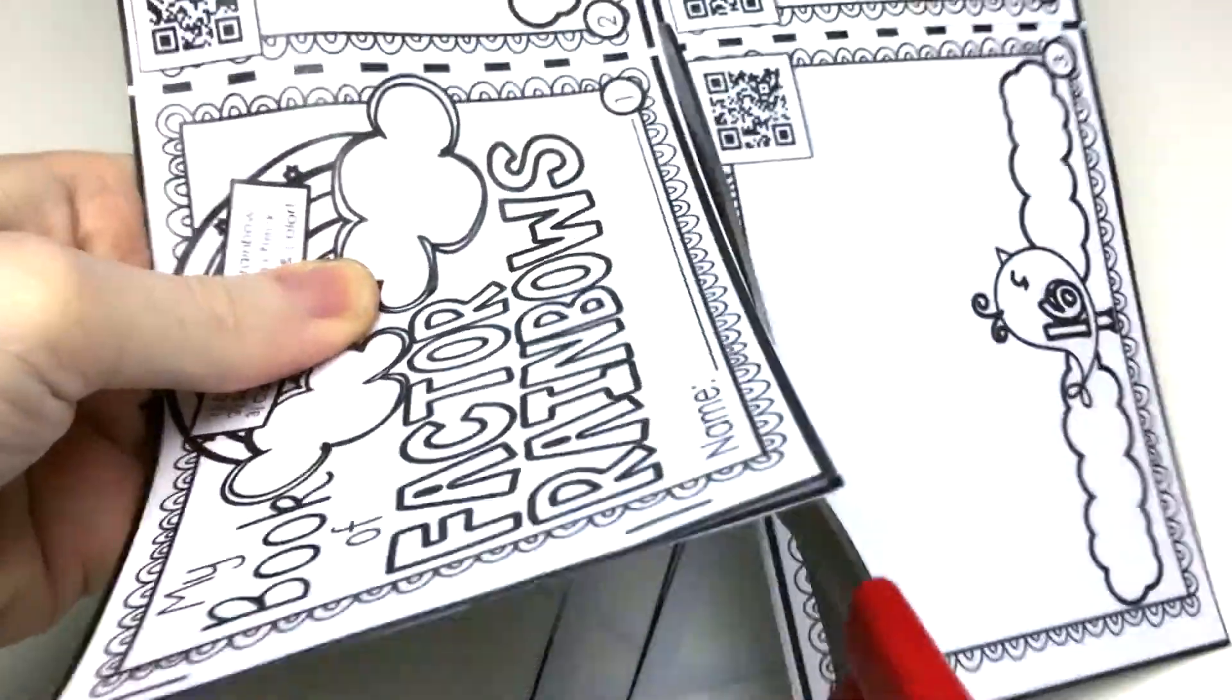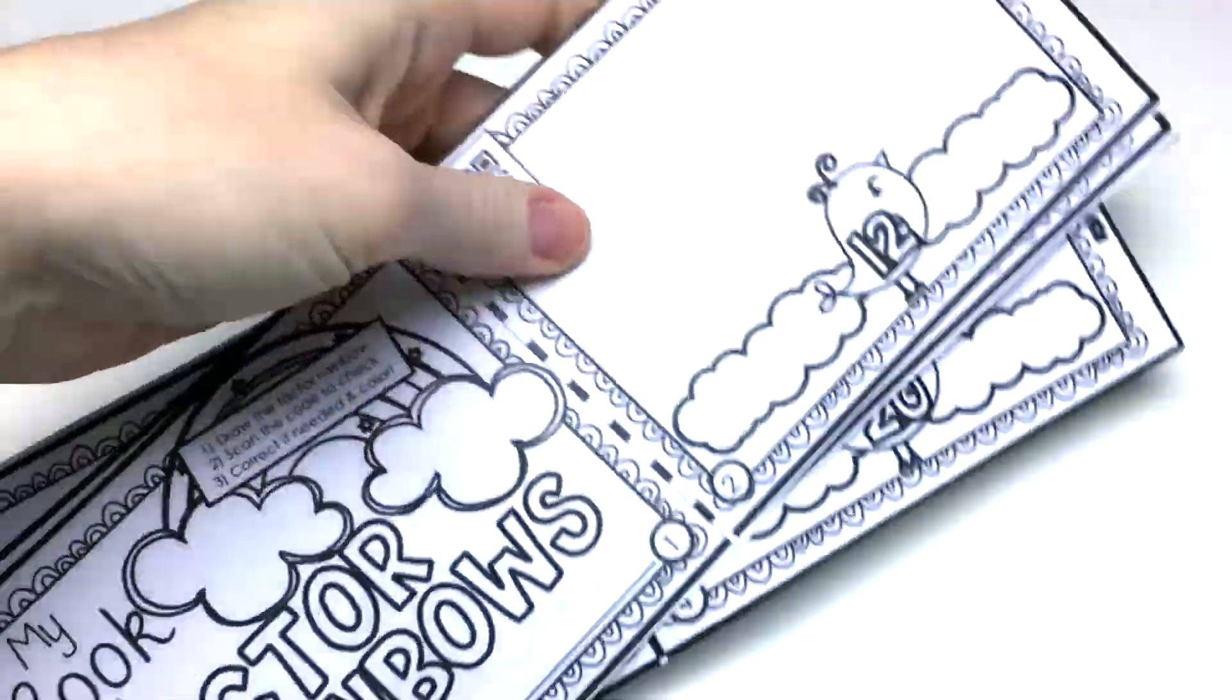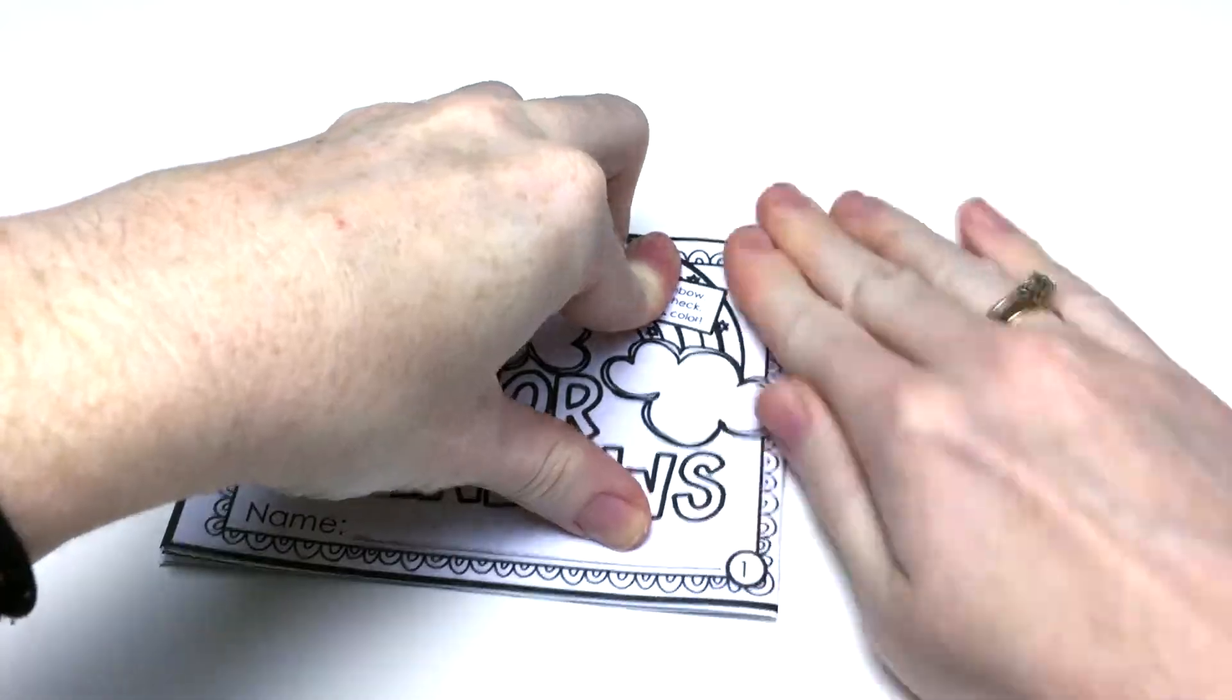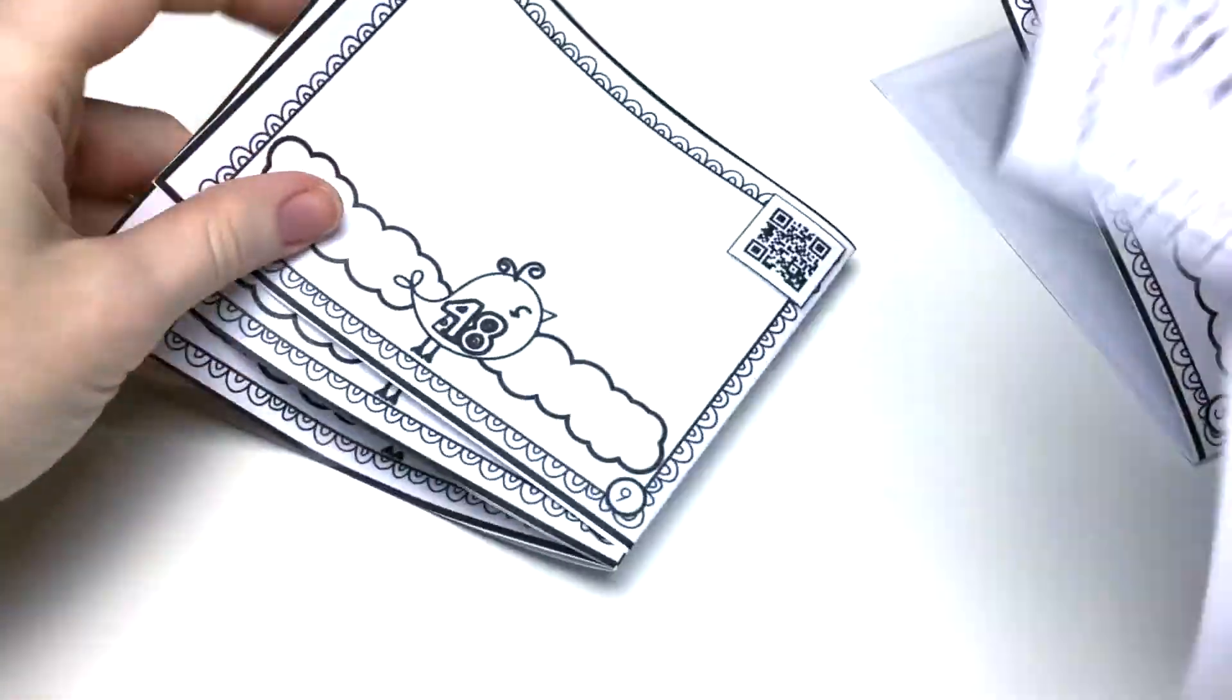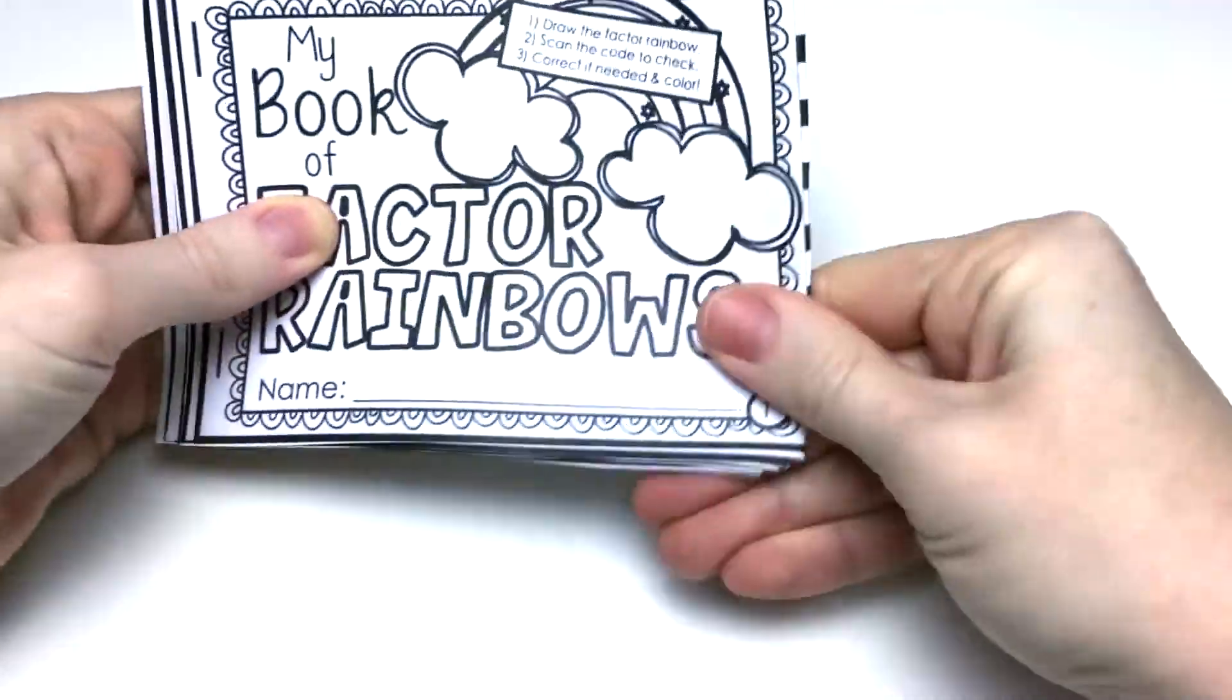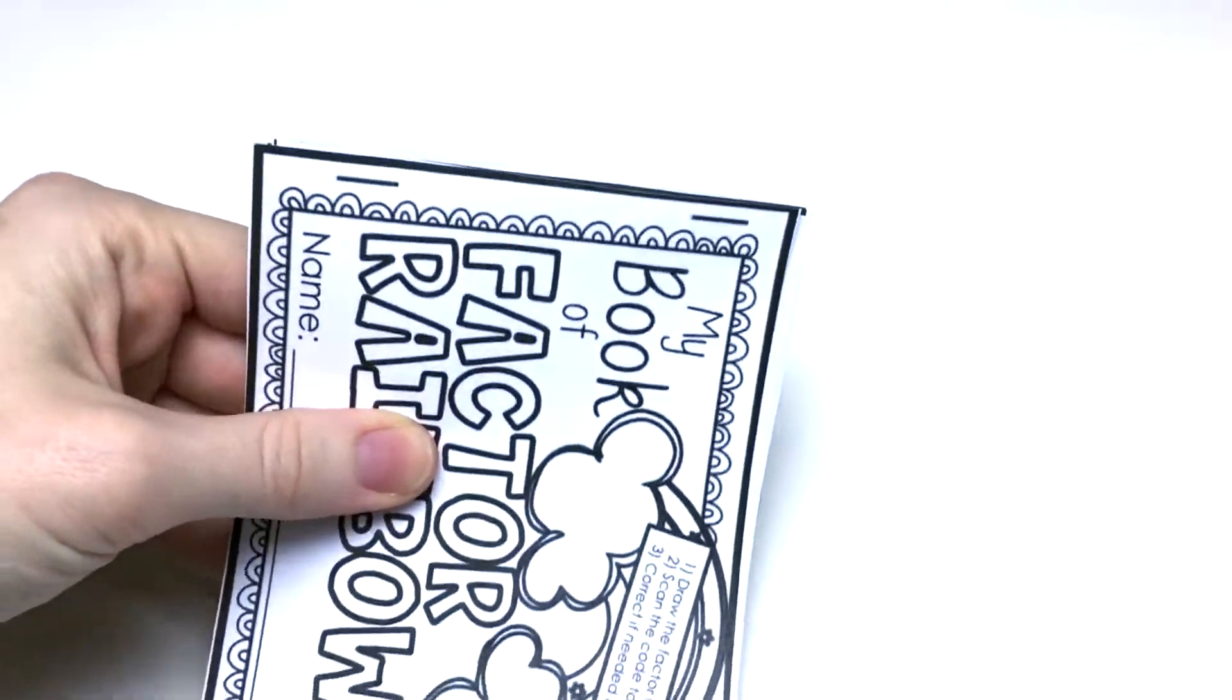You trim around the edges, cut down the middle, then fold them all together. Then you separate them, put them in order, place them in a pile, and staple on the two lines provided.